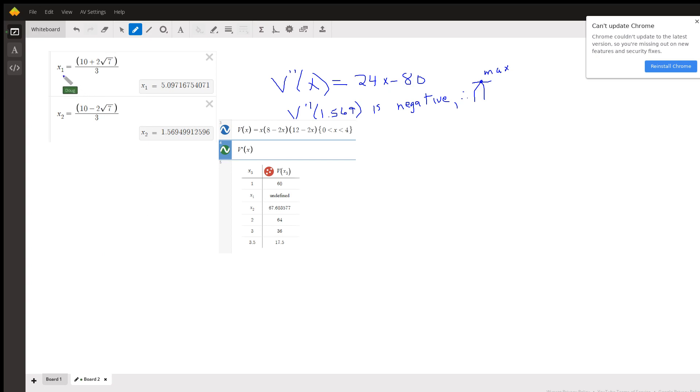Here are the actual values that you get in exact form. This number we have to reject because it's not between 0 and 4. So this should be the value of X that creates the maximum volume.